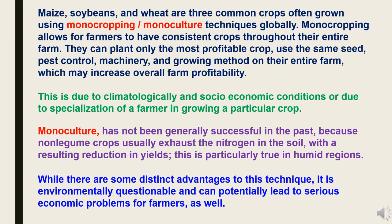Monocropping allows farmers to have consistent crops throughout their entire farm. They can plant only the most profitable crop, use the same seed, pest control methods, machinery, and growing methods on their entire farm, which may increase overall farm profitability. This is due to climatological or socio-economic conditions, or due to the specialization of a farmer in growing a particular crop. However, monoculture has not been generally successful because non-legume crops usually exhaust nitrogen in the soil, resulting in yield reduction — particularly in humid regions. While there are distinct advantages, it is environmentally questionable and can potentially lead to serious economic problems.